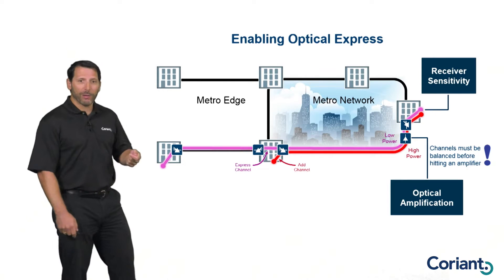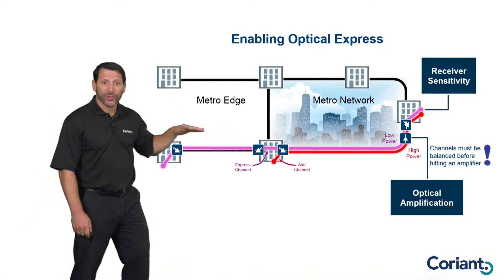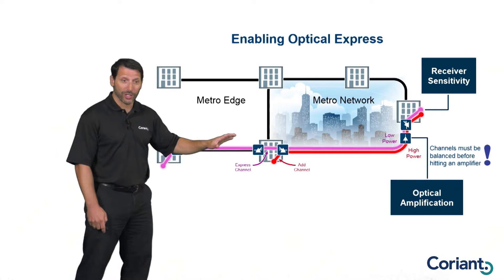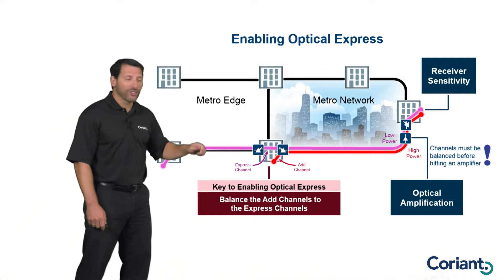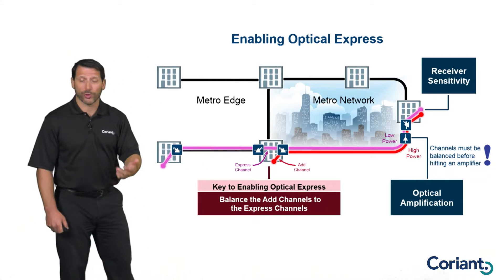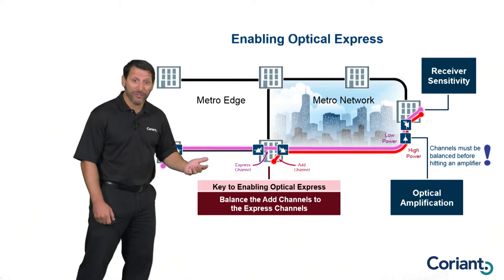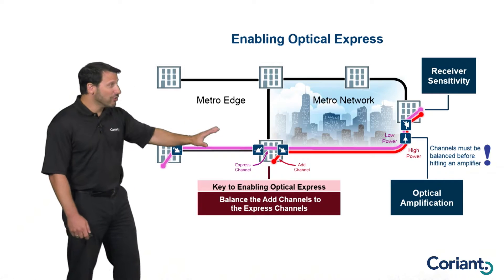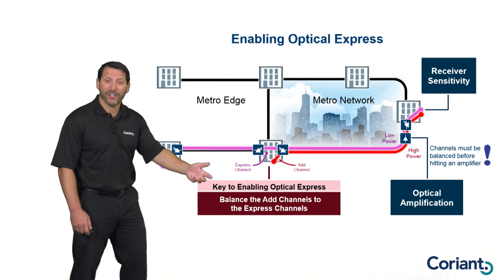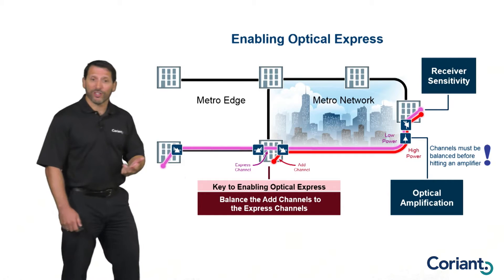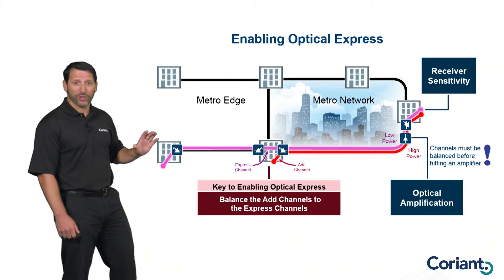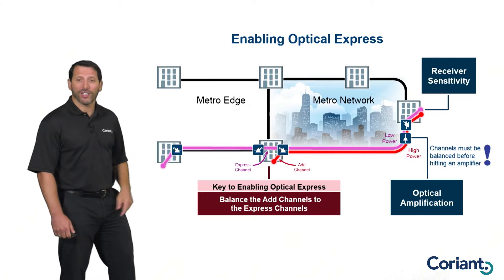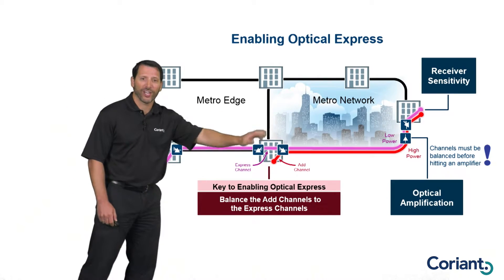So before applying amplification to optical signals, you really need to make sure those signals are at basically the same level. The problem occurs at intermediate locations where you have both express channels and add channels — and this is where you want to attack the problem. What you need to do is go to these locations and balance the express channels and the add channels. This only applies to networks with amplification. If you can reach your destination without any amplification, you don't need to worry about power balancing at all. And at terminal points where you only have add channels, all channels are launching into the fiber at the same power level — so again, no issue.